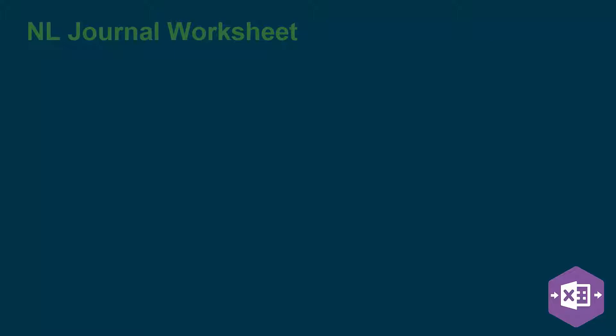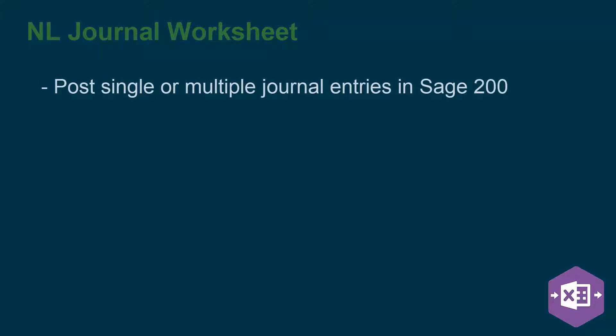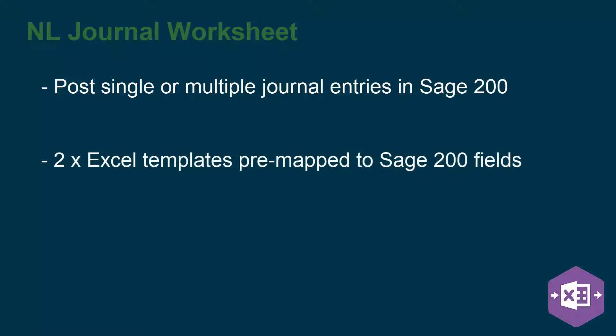The Nominal Journal Worksheet in the Excel Data Bridge enables you to post either single or multiple journal entries in Sage 200. With the Nominal Journal Worksheet come two Excel templates which are pre-mapped to the relevant fields in Sage 200. These templates allow you to create your journal entries immediately, saving you time and effort as you won't need to create Excel spreadsheets manually and map them to the Sage 200 fields yourself.